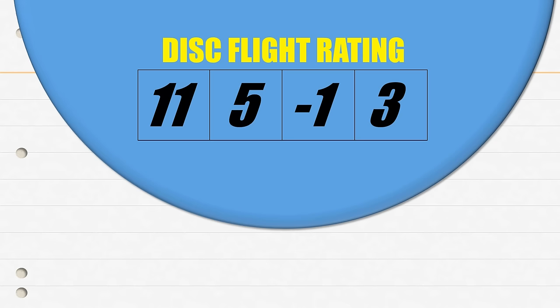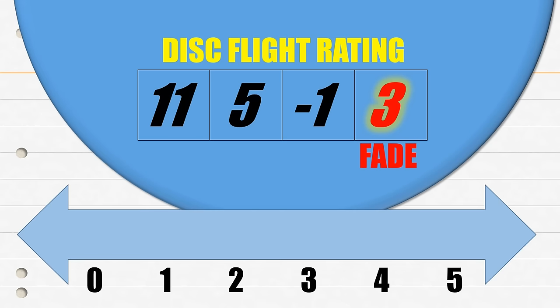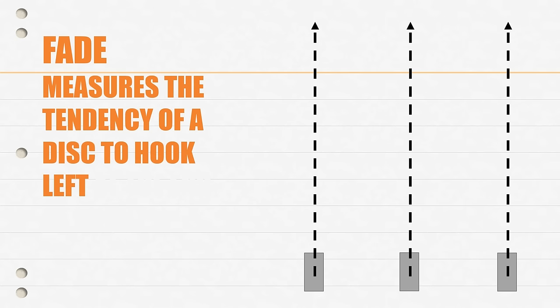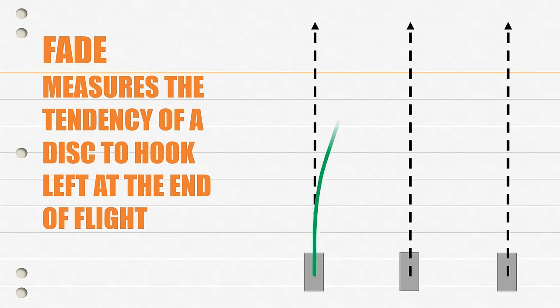In the four-number disc flight rating system, fade is represented by the fourth number and is measured on a scale from zero to five, with zero being the least fade and five being discs with the most fade. More specifically, fade measures the tendency of a disc to hook left at the end of flight. And as you can see here, fade is represented by the red portion of the flight pattern.